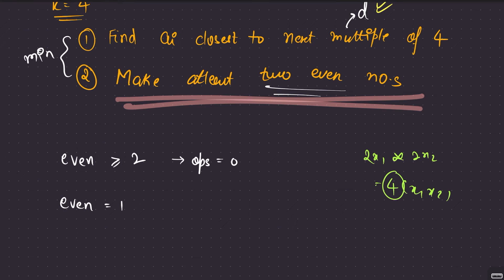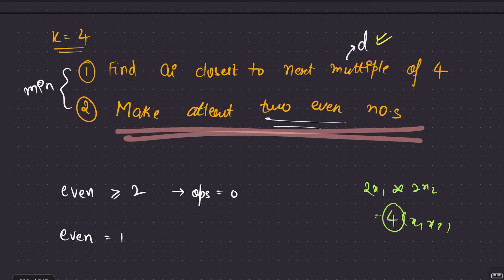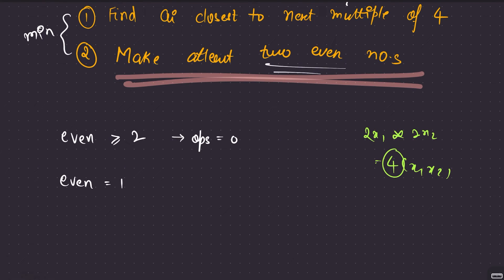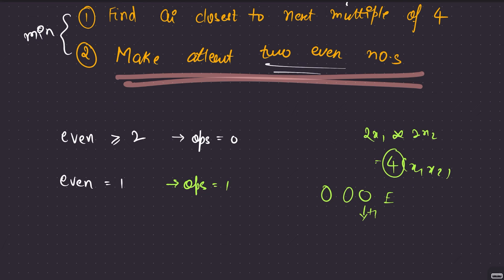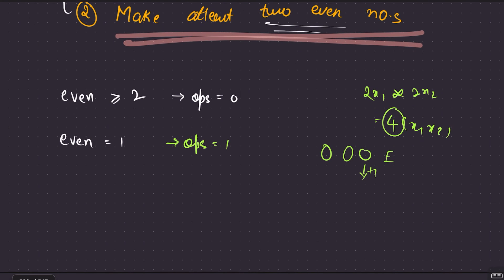If you have only one even number, it might be a multiple of 4 — in which case D evaluates to 0. Otherwise, just add 1 to an odd number to get a second even number, consuming 1 operation. So if even count is 1, the answer for this option is minimum of D and 1.